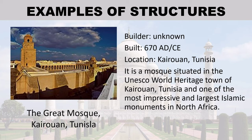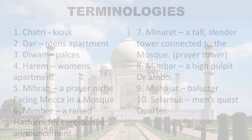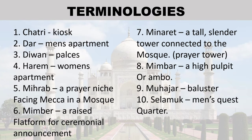The Great Mosque of Cairo and Tunisia, built approximately 670 AD/CE, located at Cairo and Tunisia. It is a mosque situated in the UNESCO World Heritage town of Cairo and Tunisia, and one of the most impressive and largest Islamic monuments in North Africa.